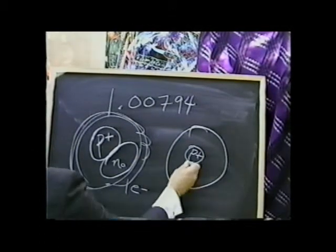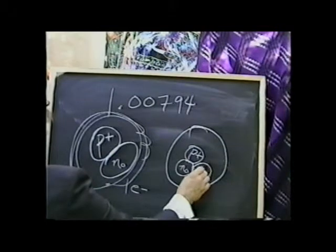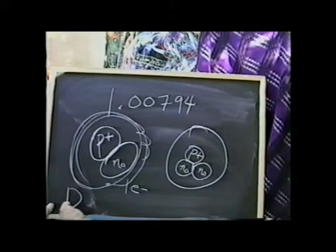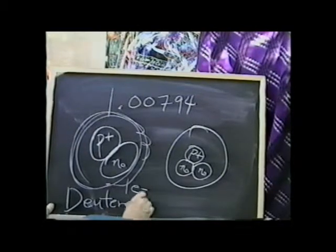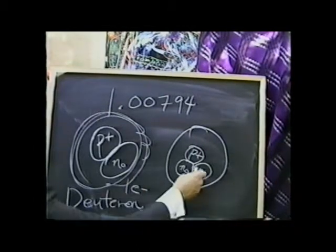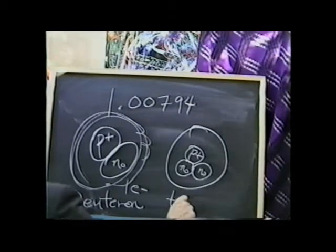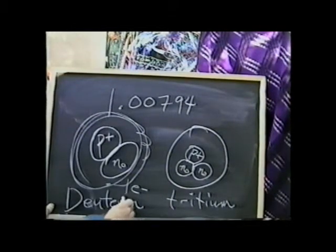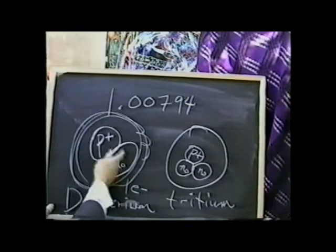It has to have one proton. What we find is it has two neutrons. Two particles here is why this is called deuteron. And three particles, because the electron hardly weighs, so one proton, two neutrons, three particles roughly, called tritium.